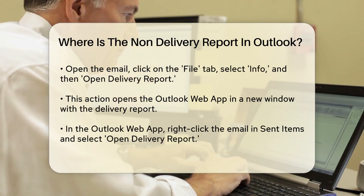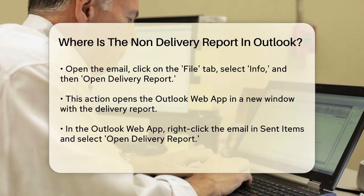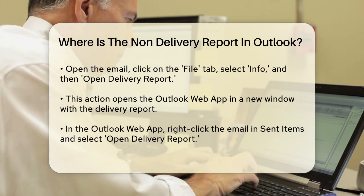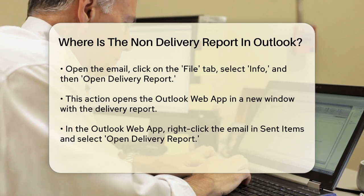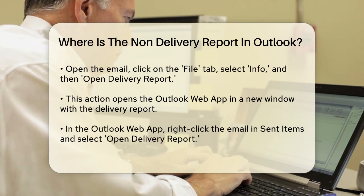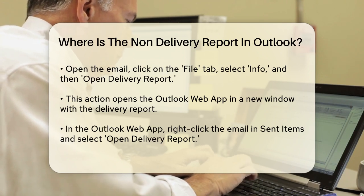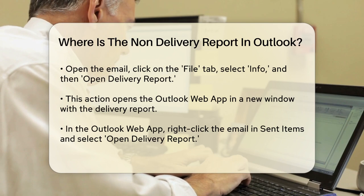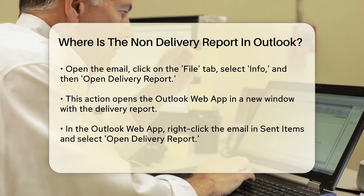If you're already using the Outlook web app, it's even simpler. Just go to your Sent Items folder, right-click on the email you want to track, and choose Open Delivery Report. This will display the delivery report right there.